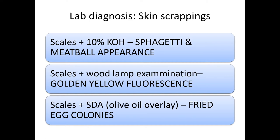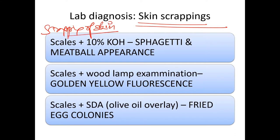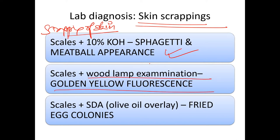For lab diagnosis of tinea versicolor, skin scrapings are taken and the scales are put in 10% potassium hydroxide (KOH). What we will see is spaghetti and meatball appearance — we'll discuss this in our image-based discussion. When scales are examined under Wood's lamp examination, we see golden yellow fluorescence.